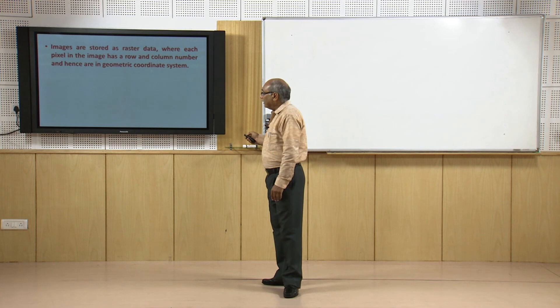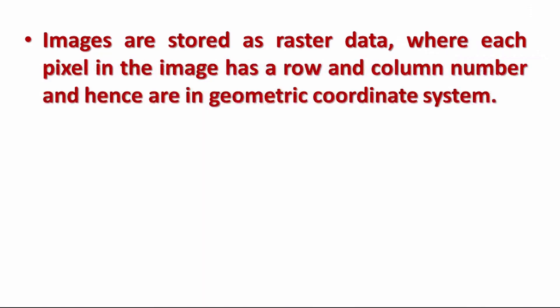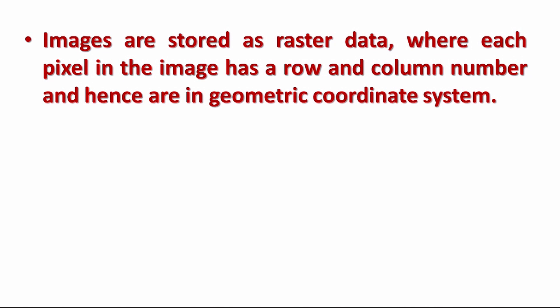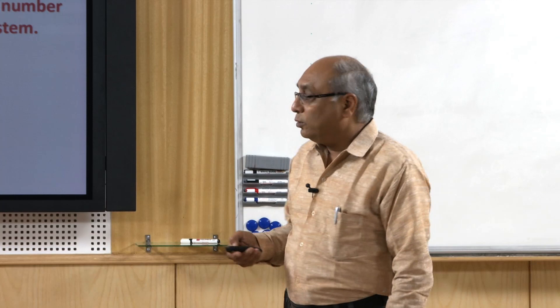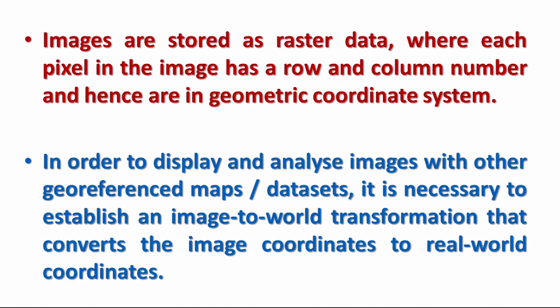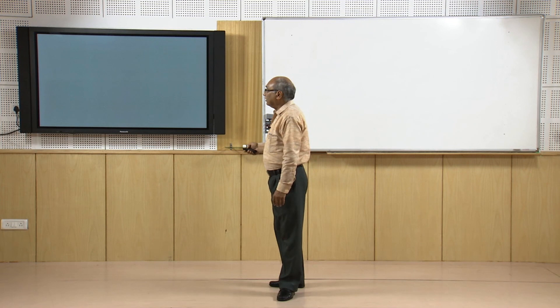All satellite images are stored as raster data, and doing georeferencing on raster data is relatively easier compared to vector data. Since raster images are made of pixels, we use row number and column number to bring them from the geometric domain to the geographic domain. Three major steps are involved, which we will see one by one. The purpose is to display and analyze images with other georeferenced maps in GIS by establishing an image-to-map transformation.